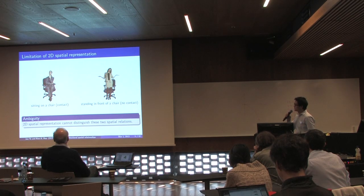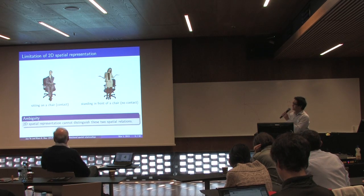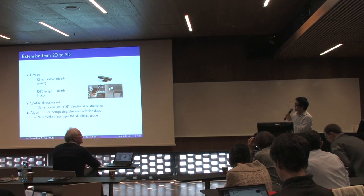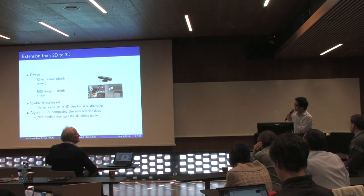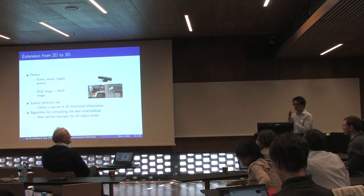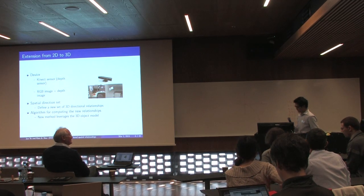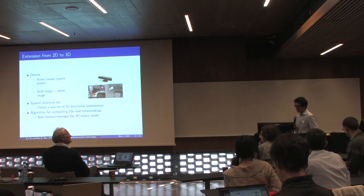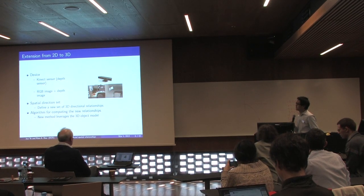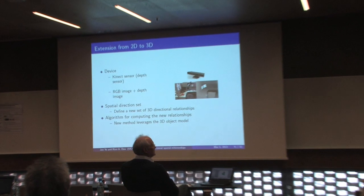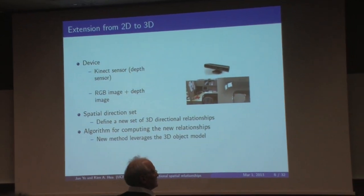There is ambiguity — we cannot tell whether the two objects are in contact or not. To resolve this ambiguity, we need to extend 2D spatial logic to 3D spatial logic. Our solution is to use the Kinect, which can provide us with depth information. The Kinect provides both an RGB image and a depth image.